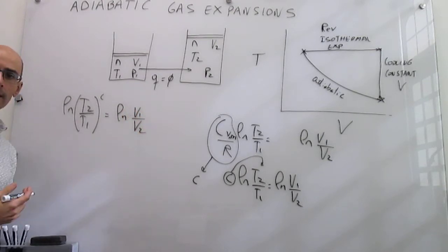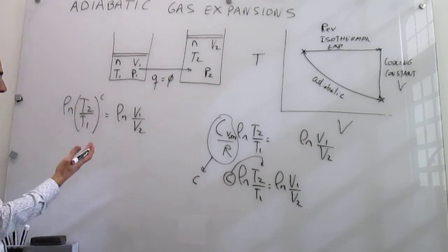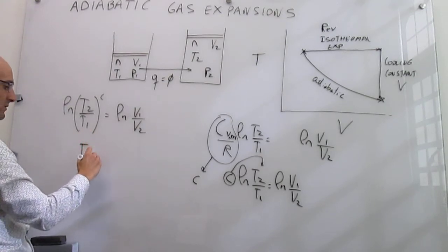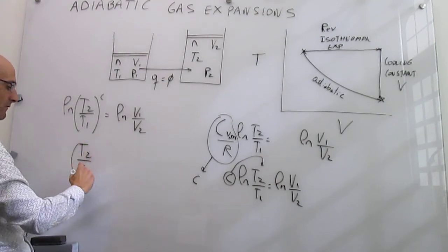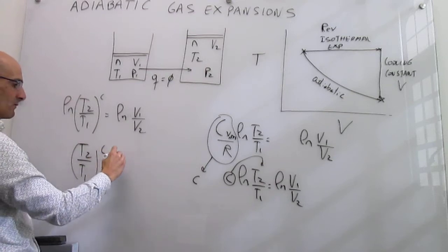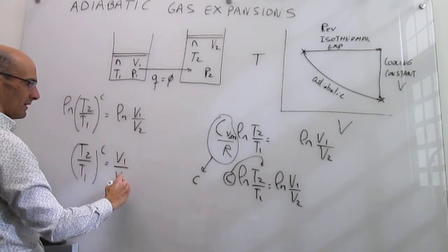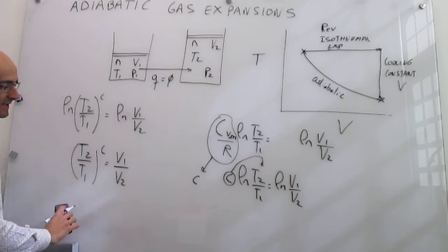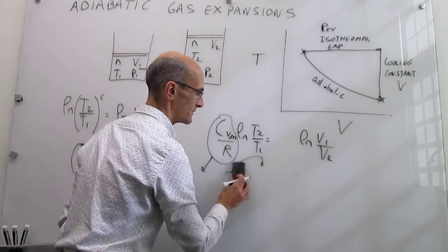So the natural logs cancel here, and you can then do T2 over T1 to the power of c is equal to V1 over V2, and this finally lets us come with a final expression, which is probably straightforward.